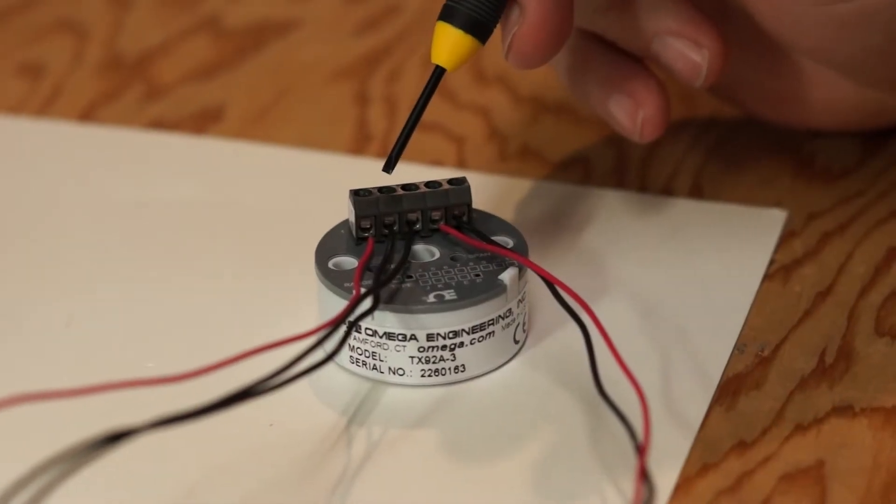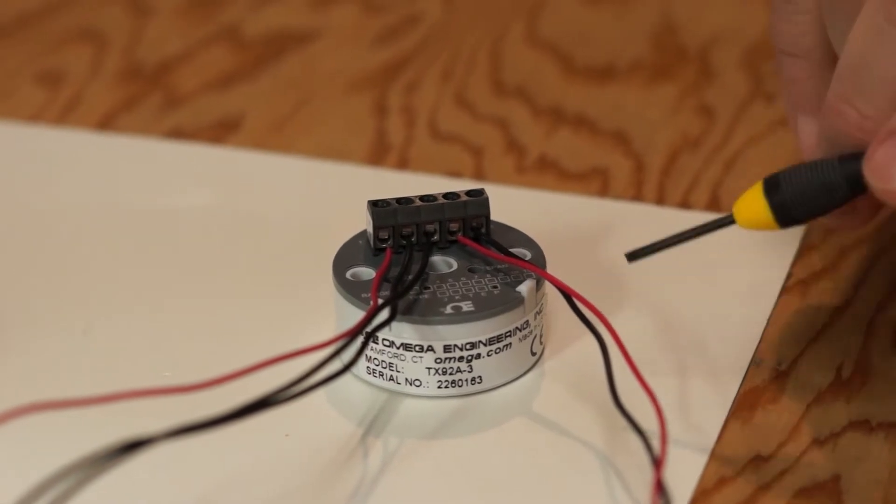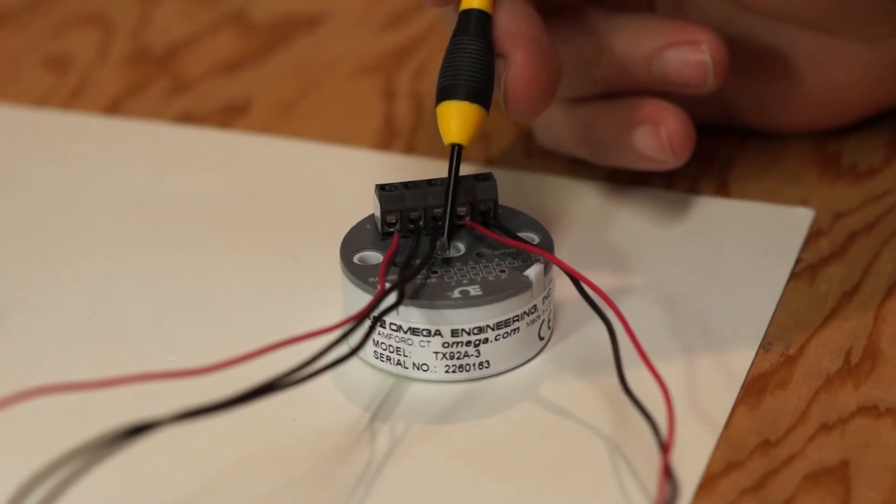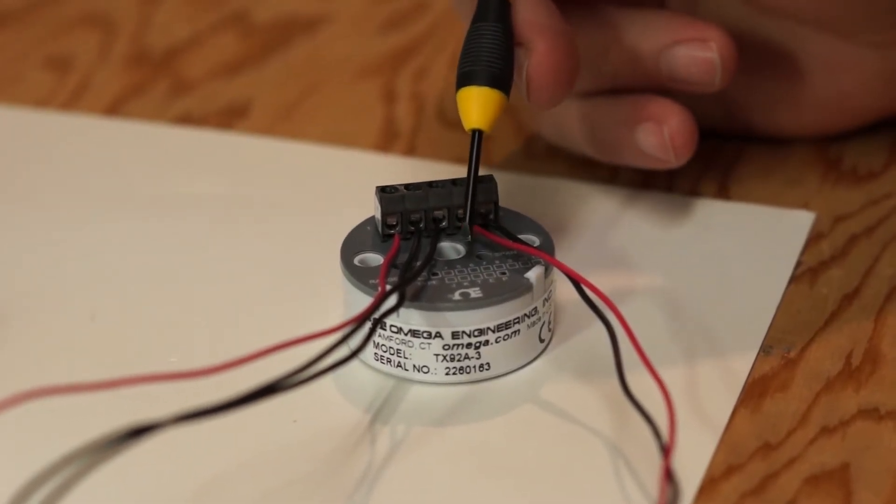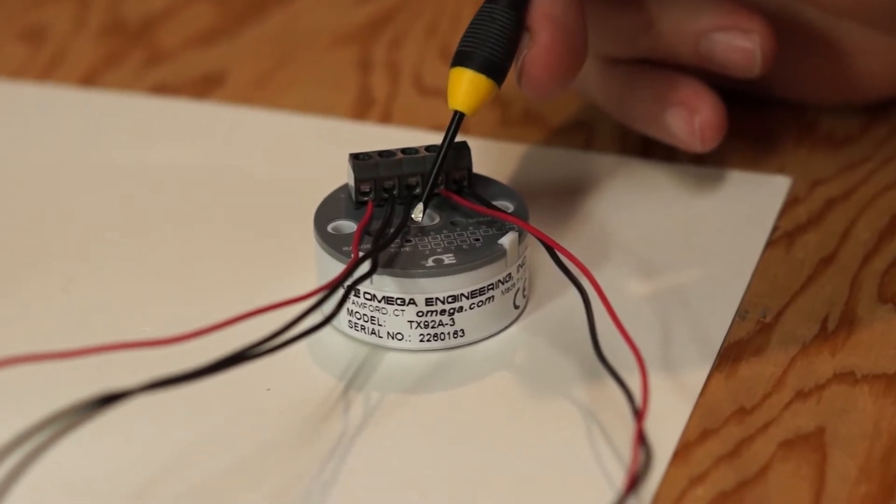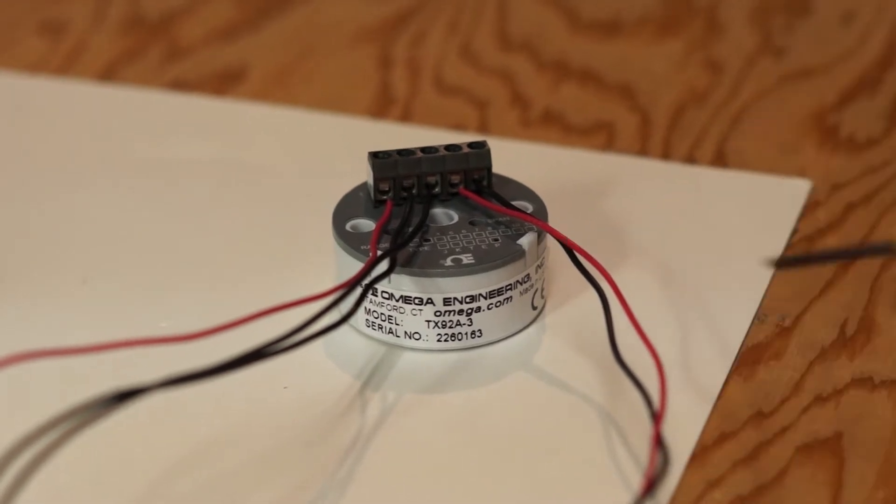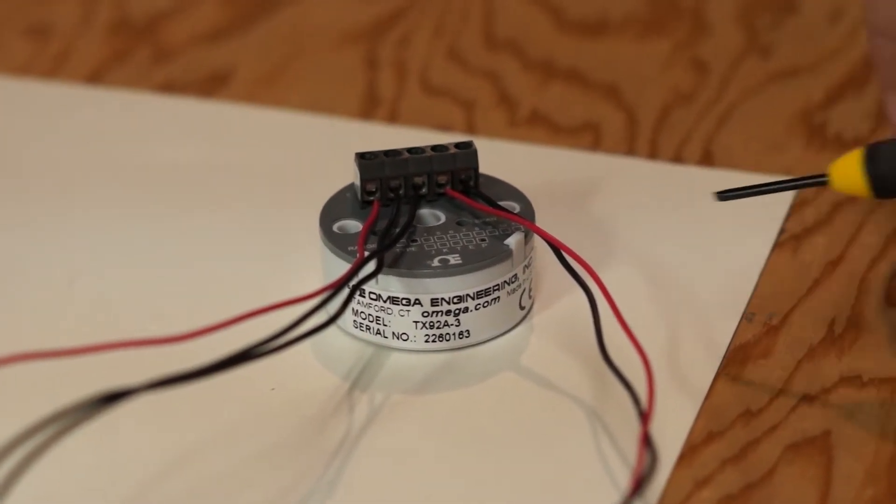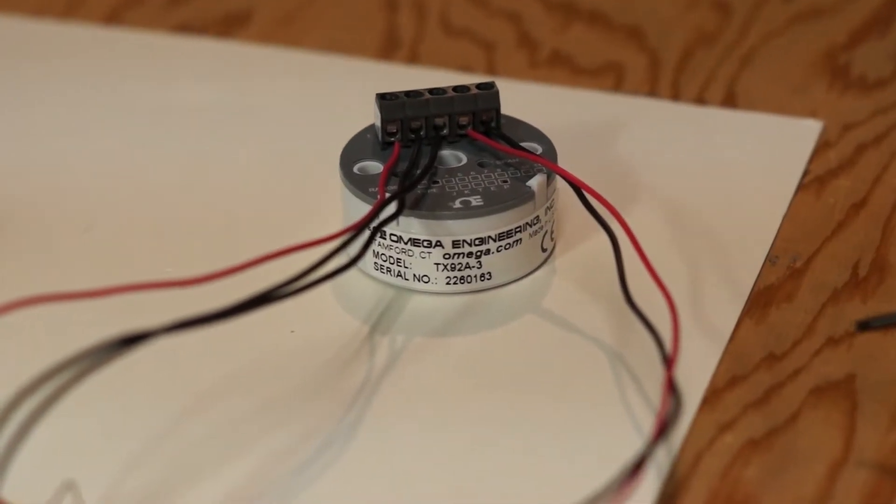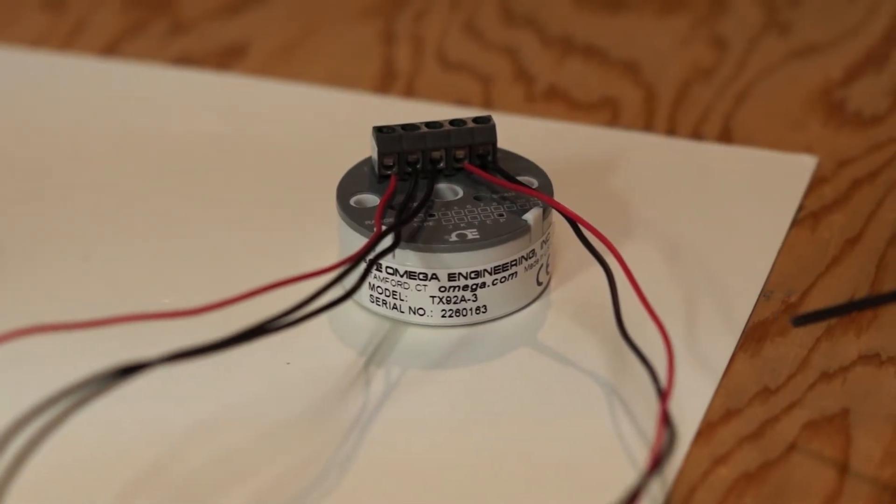So here we have the transmitter and this type is a transmitter for RTDs. It's white in color and if you recall the thermocouple is yellow in color. You can even see on the top the label here indicates that it's a type 3 which means it goes from 0 to 300 Fahrenheit and it indicates the little letter P is black in there to indicate it's a platinum RTD transmitter. Now down at the bottom here you'll see the name, it's a TX92A-3. You will have a data sheet that you can look up the information for that.